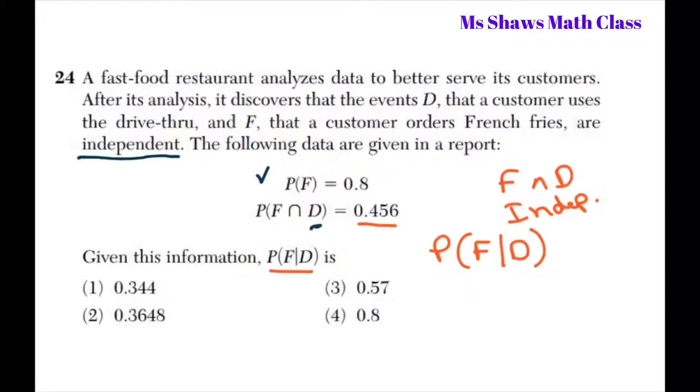So all we need to know is that this is just going to be 0.8, because the D doesn't matter since the events are independent.